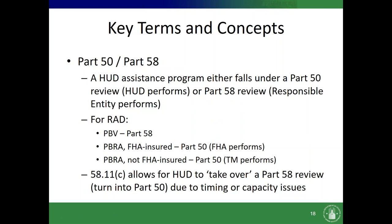For RAD: PBVs are Part 58s, PBRA and FHA-insured are Part 50s but FHA performs their own process. What we really do is Part 50s that are PBRA, not FHA-insured. However, there is a provision in Part 58 called 58.11(c) which allows HUD to take over a Part 58 review — basically magically turn it into a Part 50 — due to timing or capacity issues. Some of you may have elected to do this in cases where a deal needs to close really quickly. It's also useful if the local government just elects not to do it, or if they're not an entitlement community and there literally may not be someone to do it.